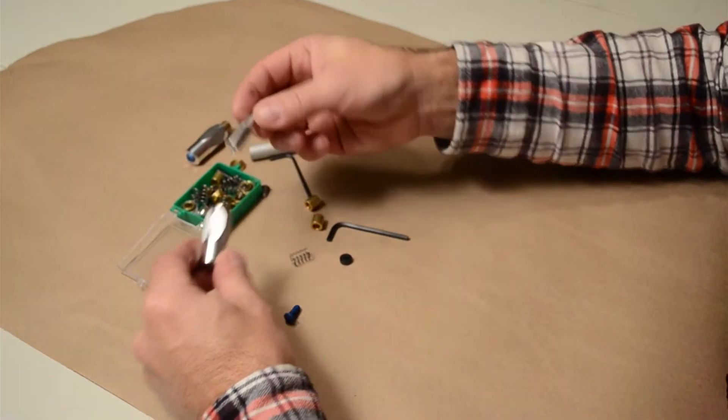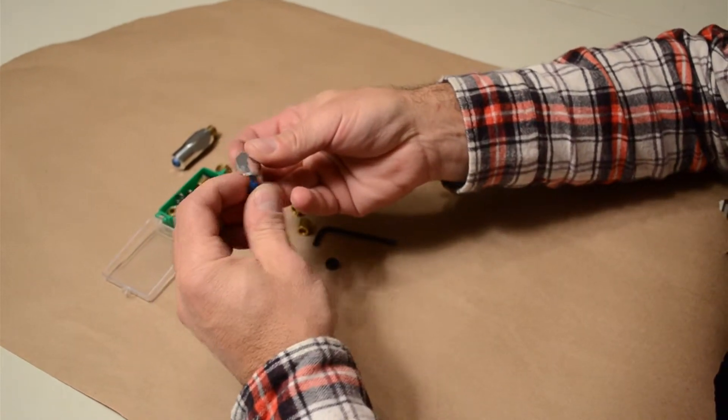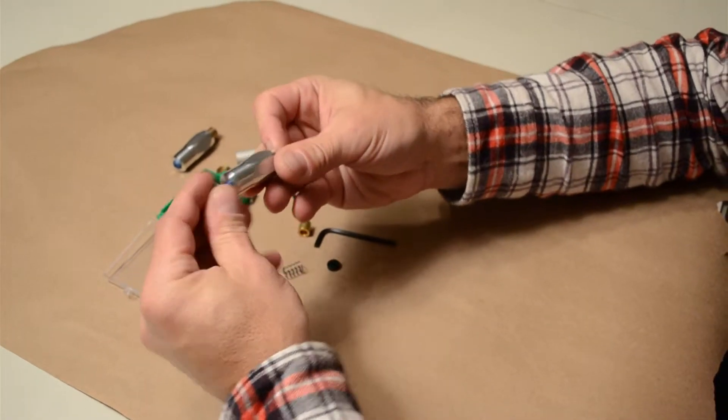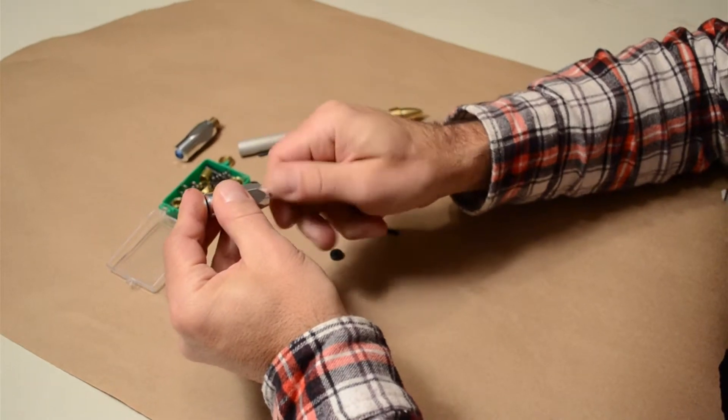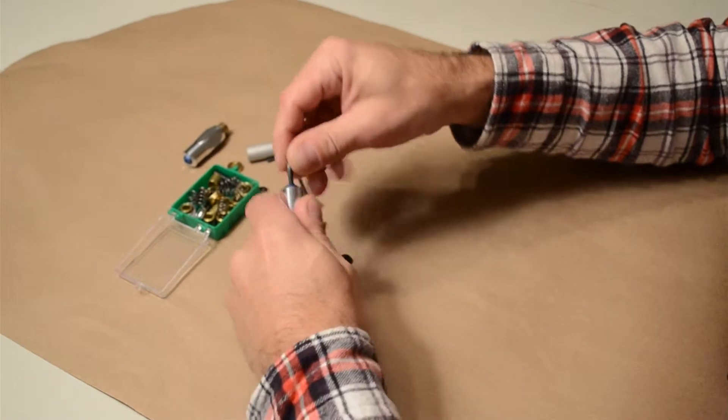So basically you take this piece, insert it into this piece, and then this screw is either black or blue. I'm going to tighten that up using the hex wrench.